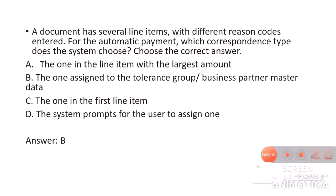The second question is: a document has several line items with different reason codes entered — for the automatic payment, which correspondence type does the system choose? As we discussed, if there are multiple line items with multiple reason codes, the system will trigger the correspondence type assigned in the business partner master data, which it indirectly gets from the tolerance group.